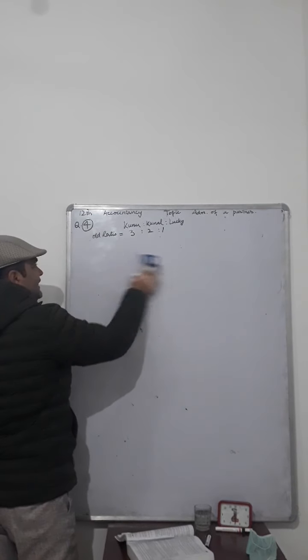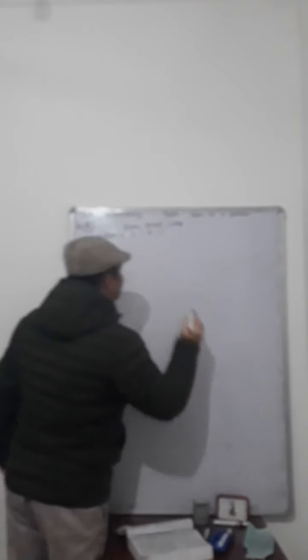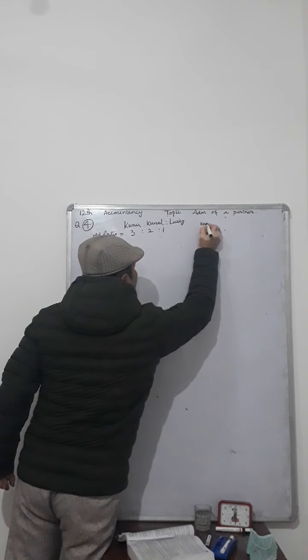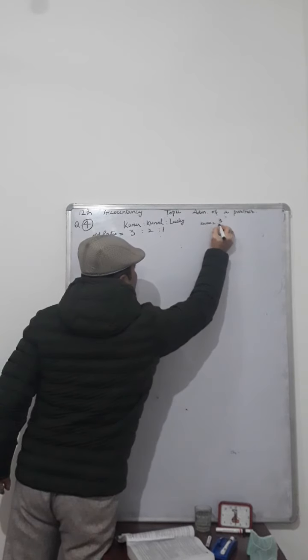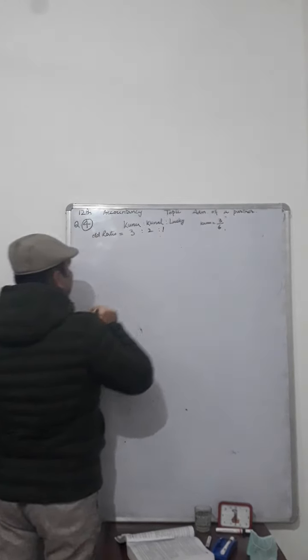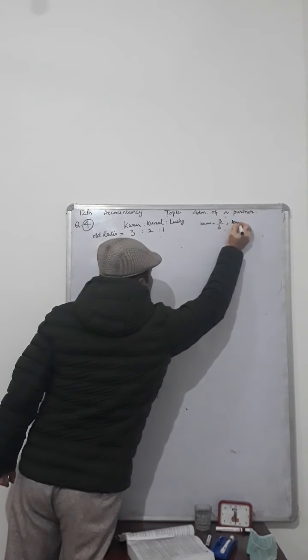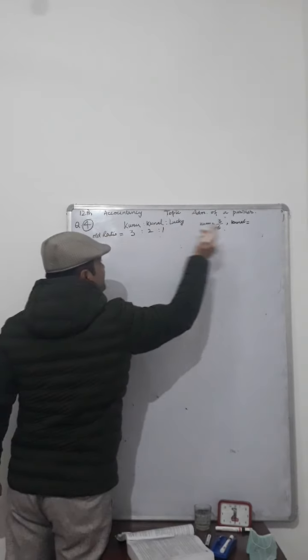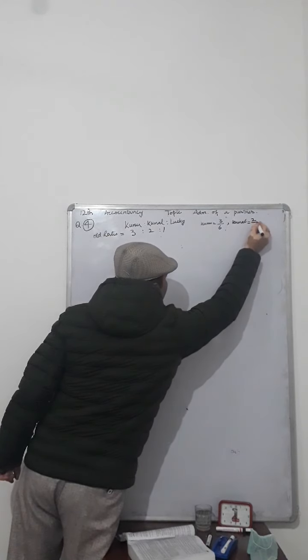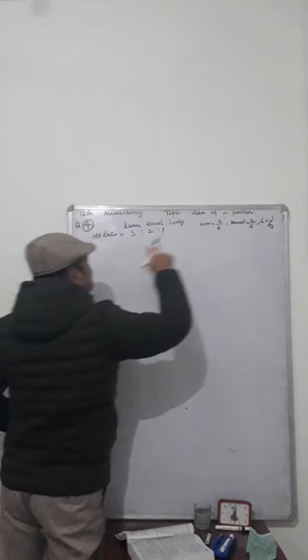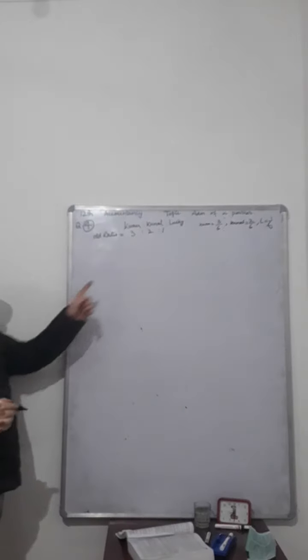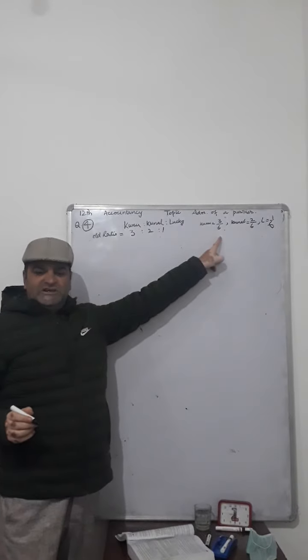With the help of this example, we can solve this question easily. Kunu's share is equal to 3 out of 6, that is 3 by 6. Kunal's share is equal to 2 by 6, and Lucky's share is equal to 1 by 6. This represents their old ratio.